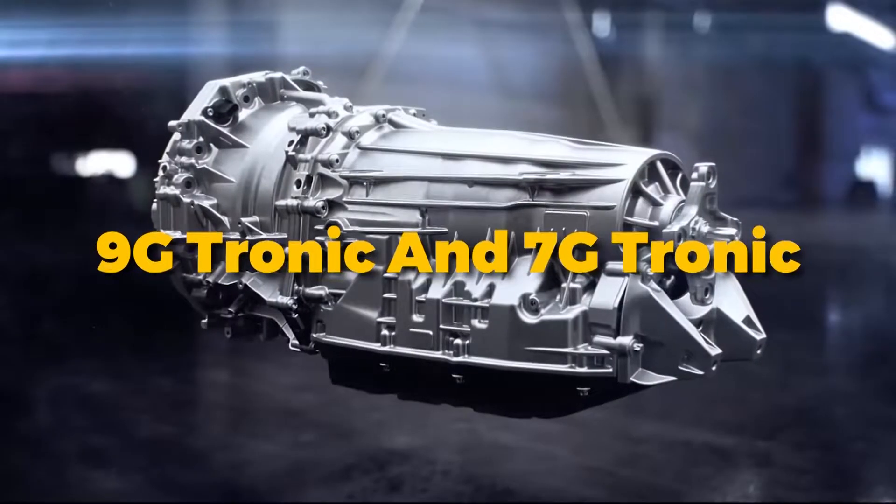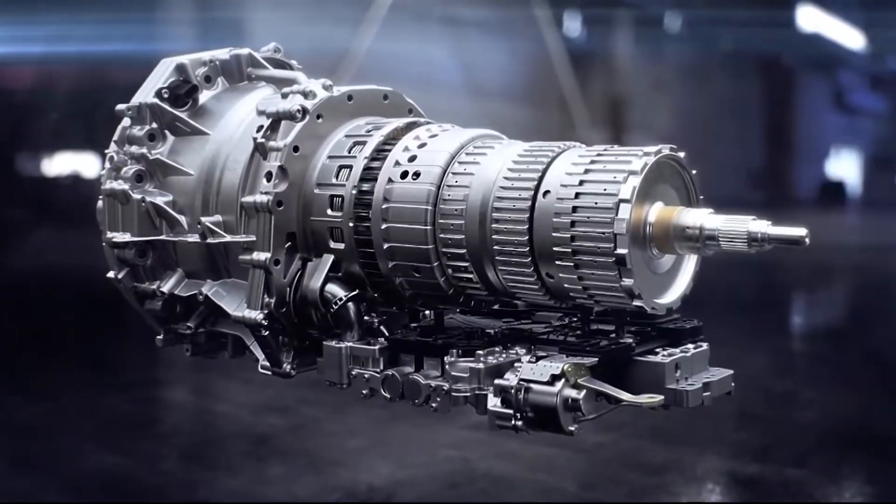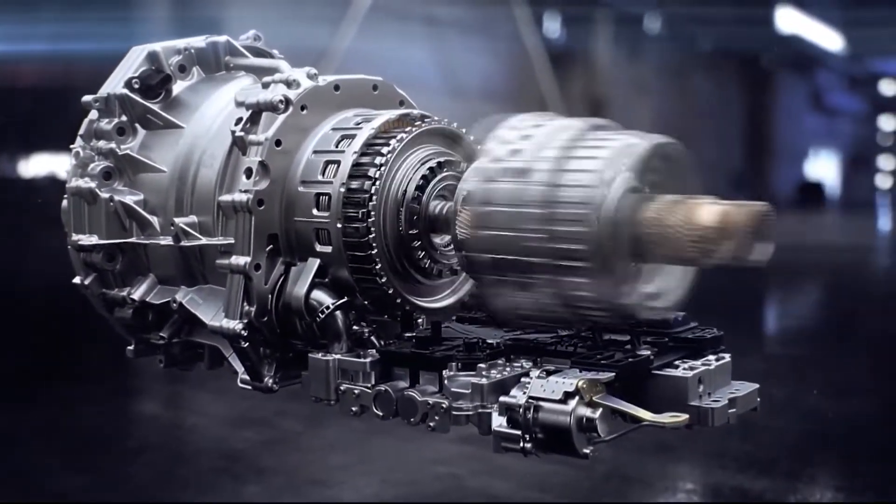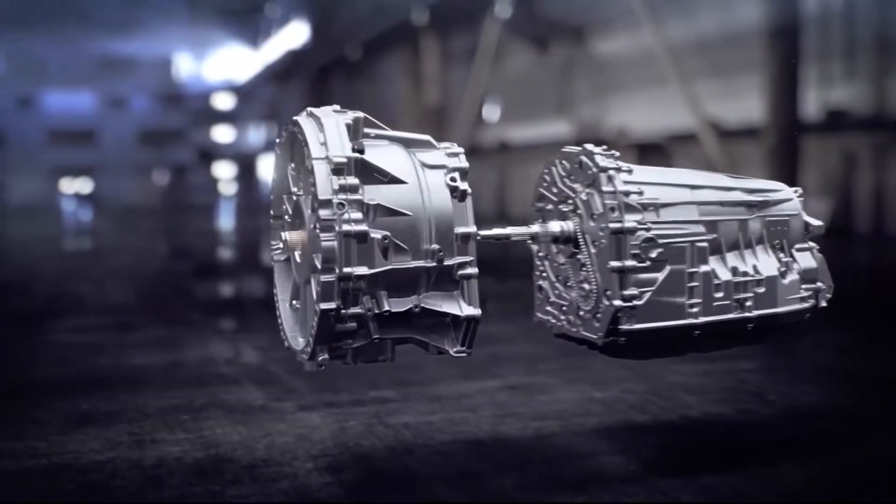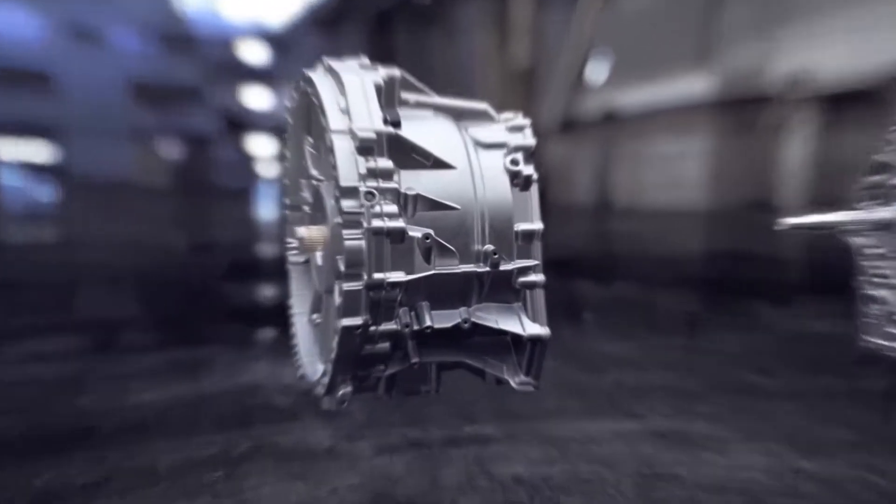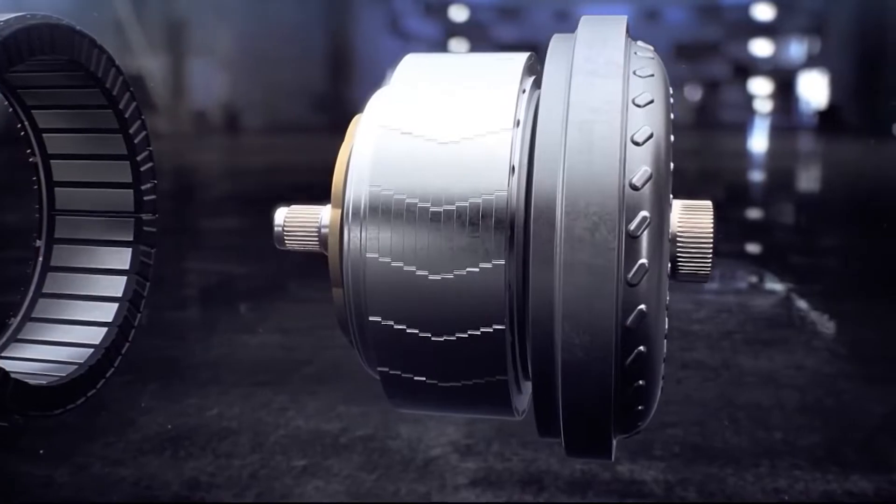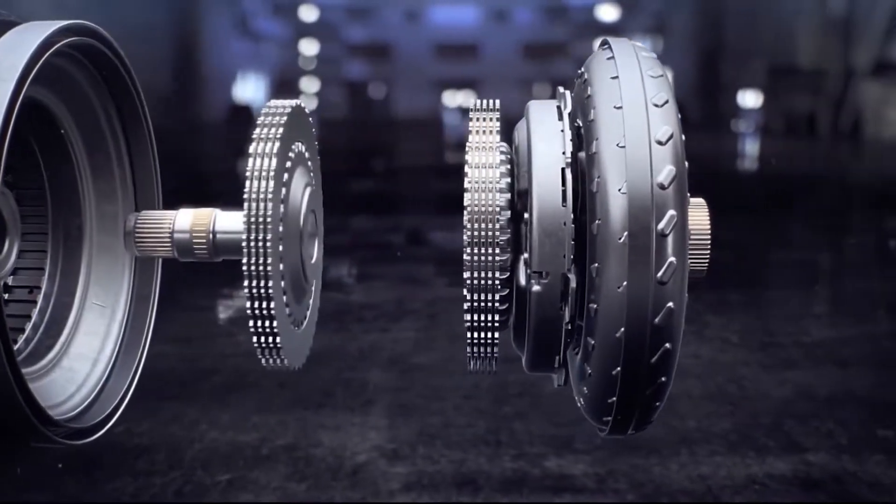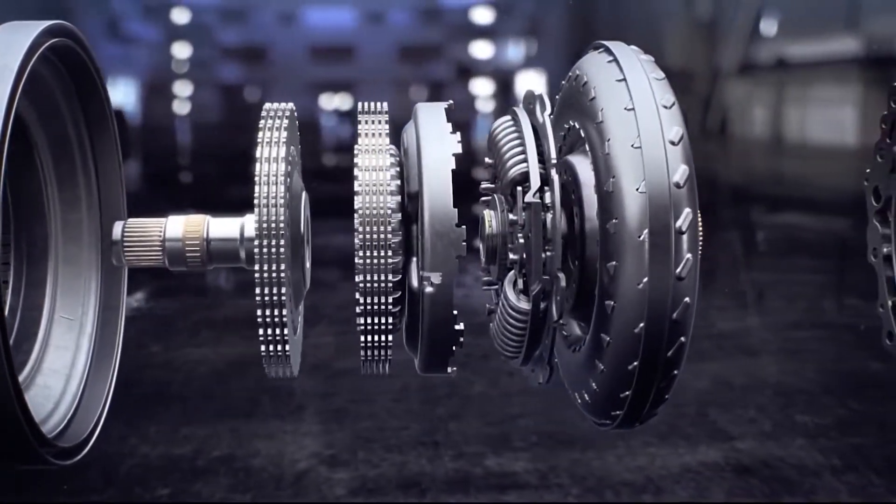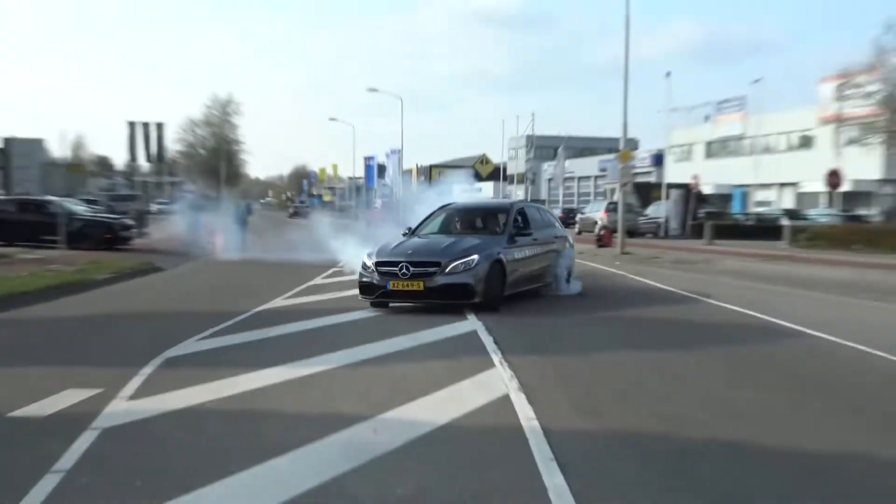9G-Tronic as well as 7G-Tronic. Mercedes-Benz trademarked its 9-speed and 7-speed torque converter automatic transmissions as 9G-Tronic and 7G-Tronic respectively. The torque converter auto gearbox mechanism underpins the 9G-Tronic and 7G-Tronic transmission systems, which are available in the C-Class, E-Class, and S-Class.